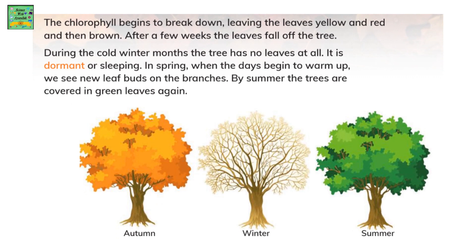The chlorophyll present in the leaves begins to break down, leaving the leaves yellow, then turning to red, and finally brown. After a few weeks the leaves fall off the tree. During the cold winter months the tree has no leaves at all — it is dormant, or sleeping. In spring, when the days begin to warm up, we see new leaf buds on the branches, and by summer the trees are covered in green leaves again.